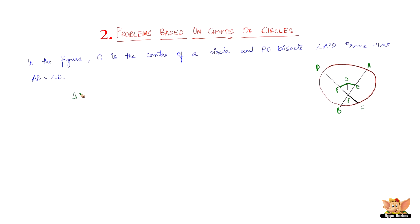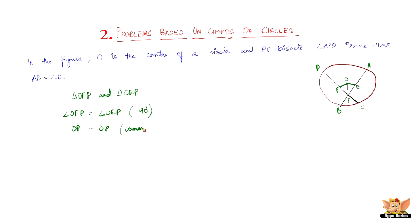Considering triangles OFP and OEP: angle OFP equals angle OEP because they are at 90 degrees to CD and AB respectively, since we drew them perpendicular. Then OP equals OP because it is the same side shared by both triangles — common. And angle OPE equals angle OPF because OP bisects angle APD.